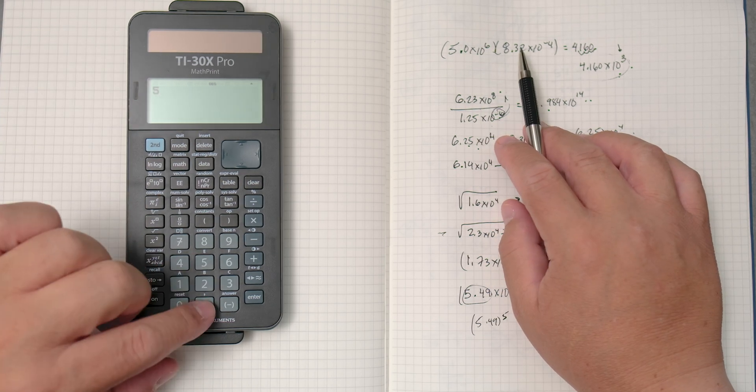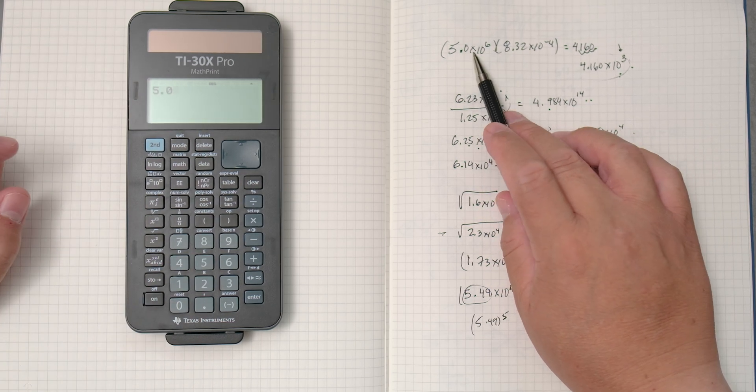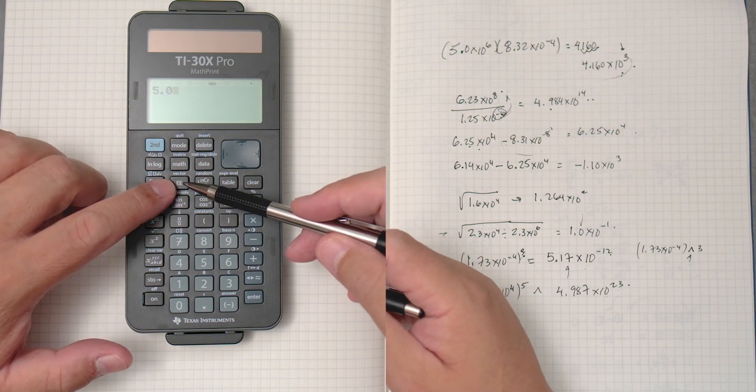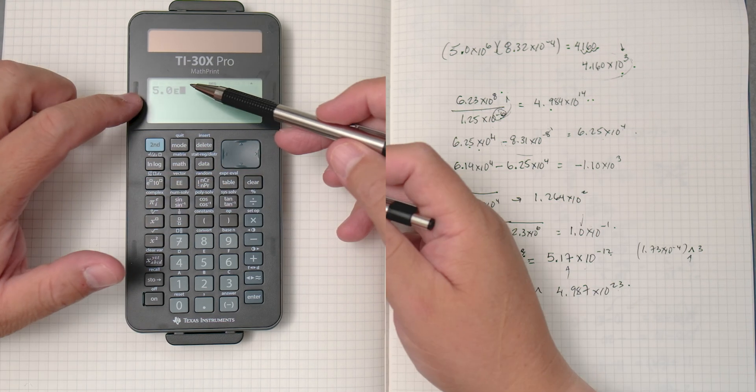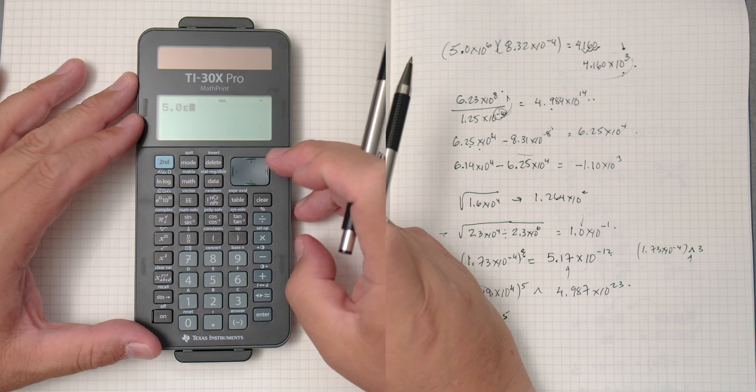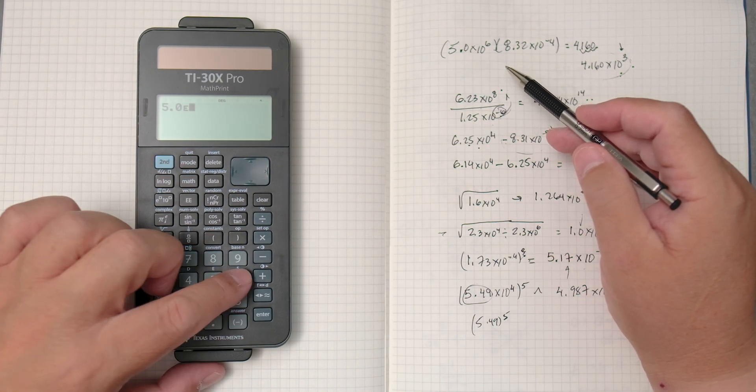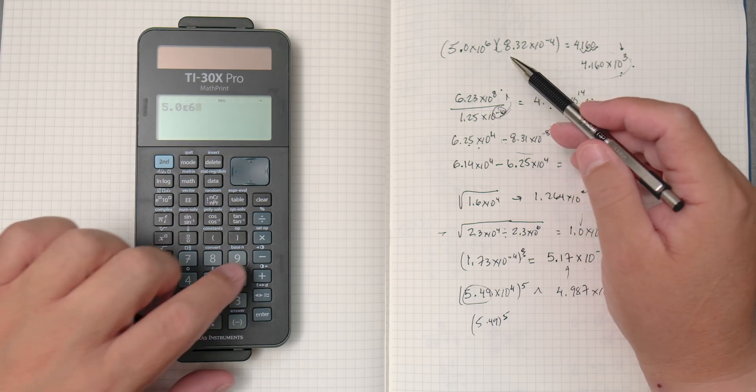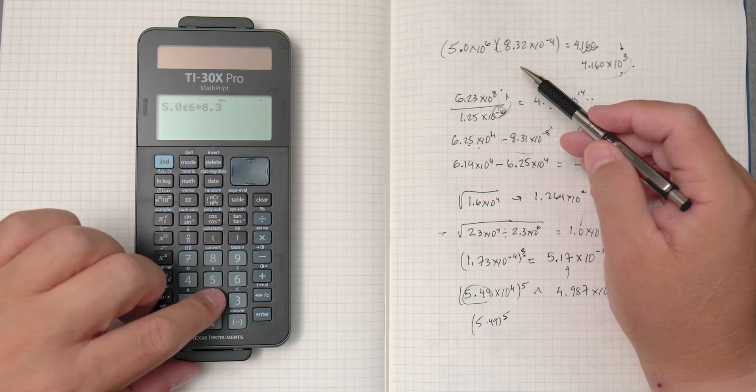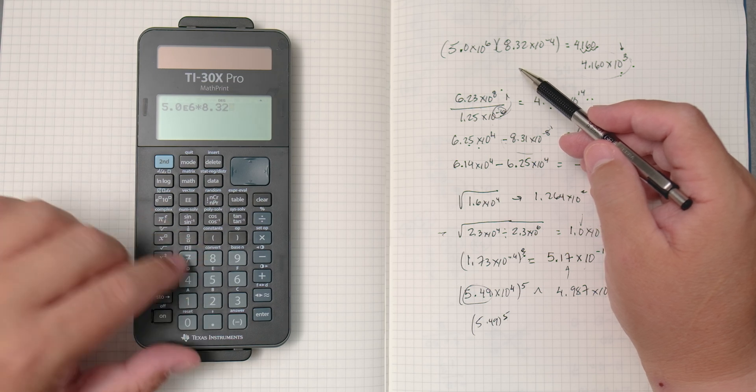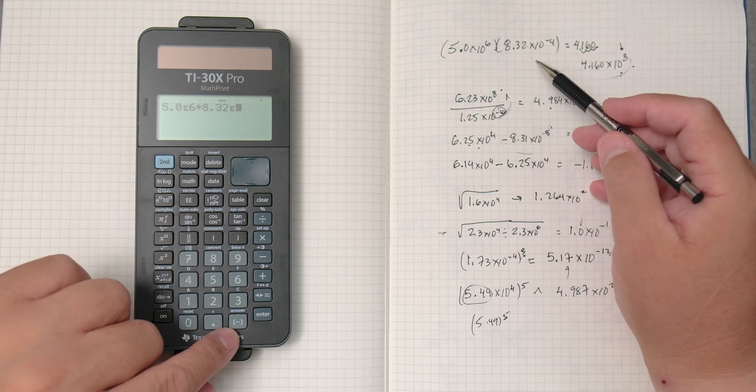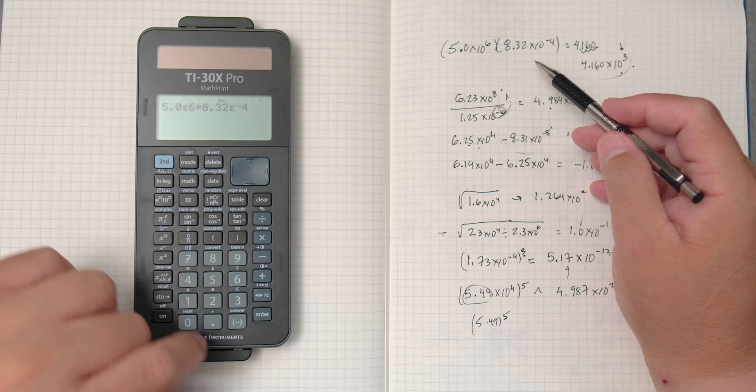To do that, 5.0 and then times 10 is the double E on this calculator. So press that and gives you an E right there. And so that's the power of 6 times, I'm going to do times, 8.32 and then to the power of negative 4. So this negative right here, negative 4, enter.